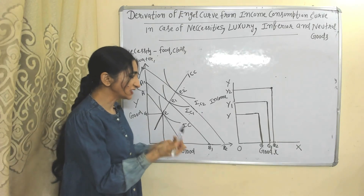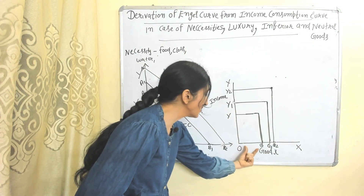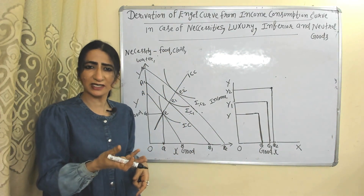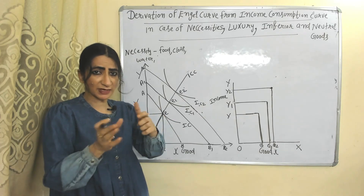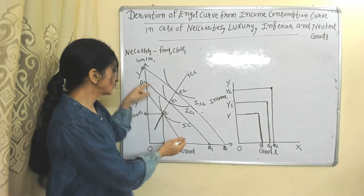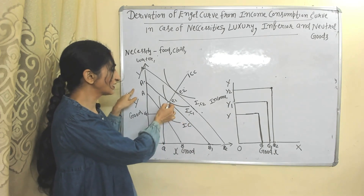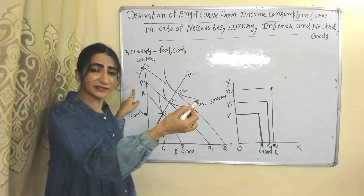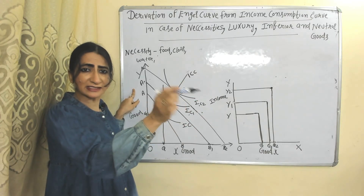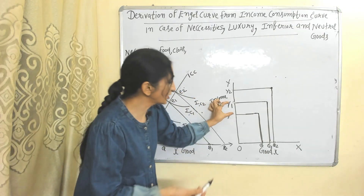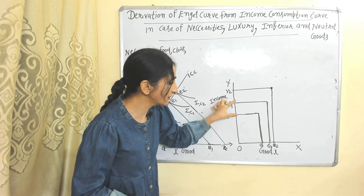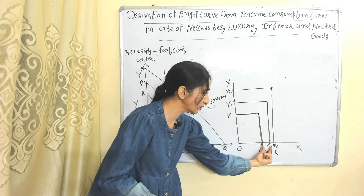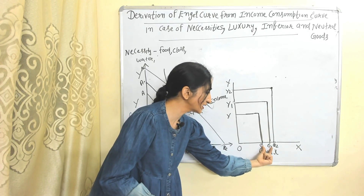The same initial income we will show here, and the same quantities of X we will show here. Now suppose the income of the consumer increases. As income increases, the budget line shifts outward. This is the new budget line, new indifference curve, and new consumer equilibrium point. Obviously, as income increases, the consumer will increase quantities of both goods X as well as Y. The same increase in income we show here from Y to Y1, and the same increase in quantities of X we show here — as income increases, quantities of X increase from Q to Q1.